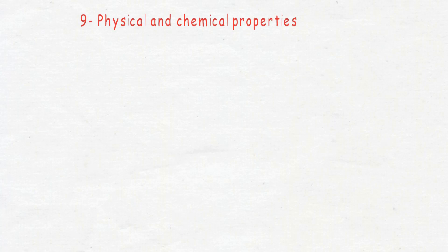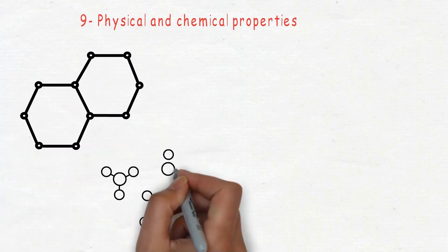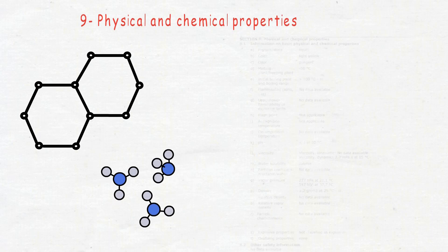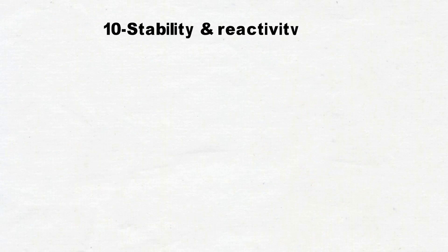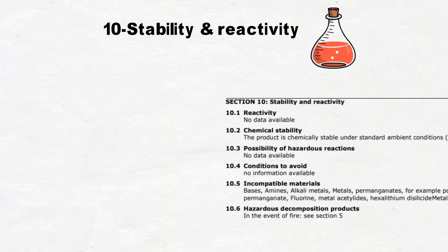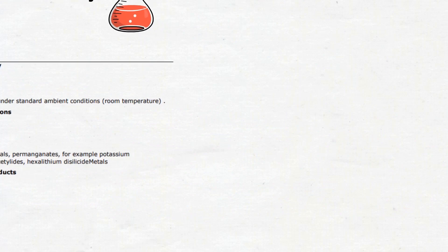Section number 9 covers Physical and Chemical Properties, including information on basic physical and chemical properties plus other information. Section number 10 covers Stability and Reactivity — the stability of the chemical, its reactivity, possible hazardous reactions, conditions to avoid, and incompatible materials.